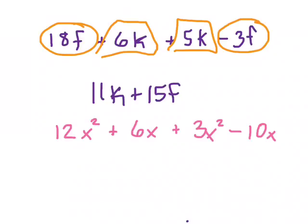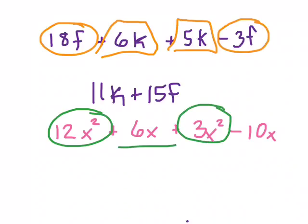Here's another example of how things that may look similar to start with may actually not be like terms together. Here I've got 12x squared plus 6x plus 3x squared minus 10x. One thing to know is that any variable, even if it's the same as another variable, isn't a like term if it has a different exponential value. So when we look at 12x squared, that's going to be a like term with 3x squared, but not with 6x and not with negative 10x.